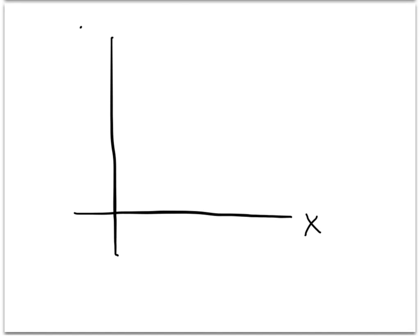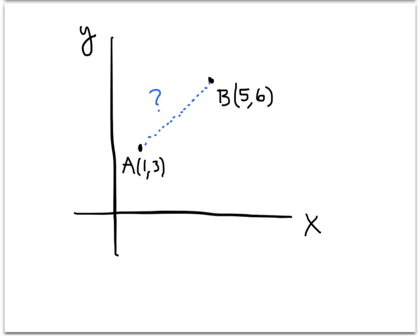Let me draw an x and y axis here. So let's suppose we had the point, which is right about there. I'll give that point a name — I'll call it A. And I've got another point, which I'll call B, which is up here somewhere. So the question is: how far apart are these two points? How much distance is there between them? That's what I would like to figure out.